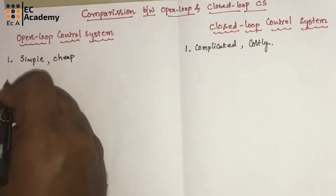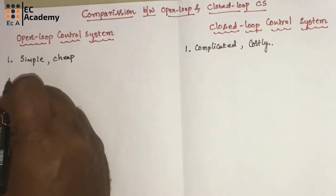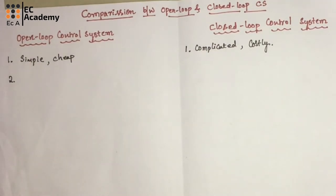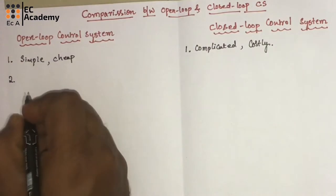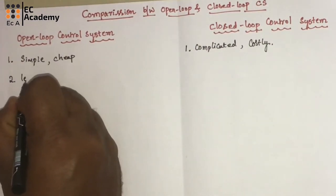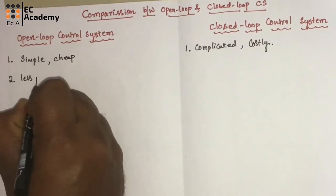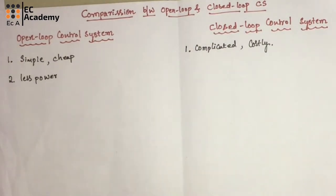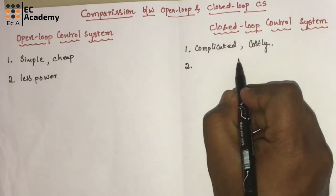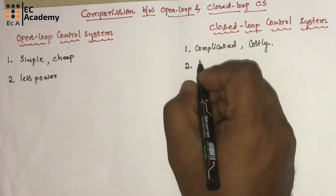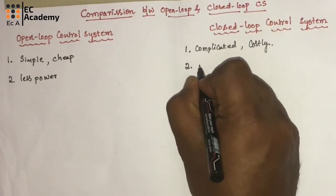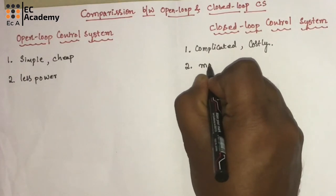Since the open loop control systems are simple and cheap, they consume less power. And closed loop control systems are complicated and costly, that is why they consume more power.